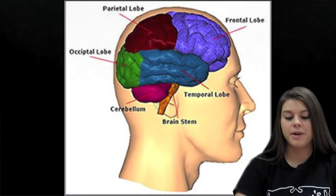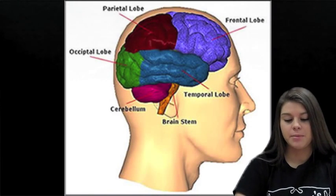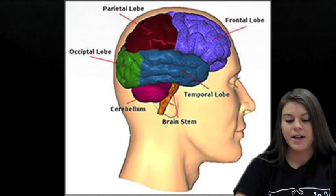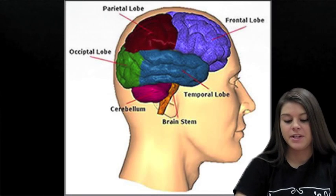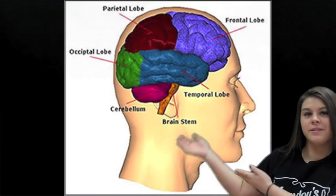Now that you know all the parts of the brain, let's get started. To learn about the exterior brain, click on either the temporal lobe, occipital lobe, parietal lobe, frontal lobe, or the cerebellum. If you want to learn about the interior lobe, wait for the next picture.